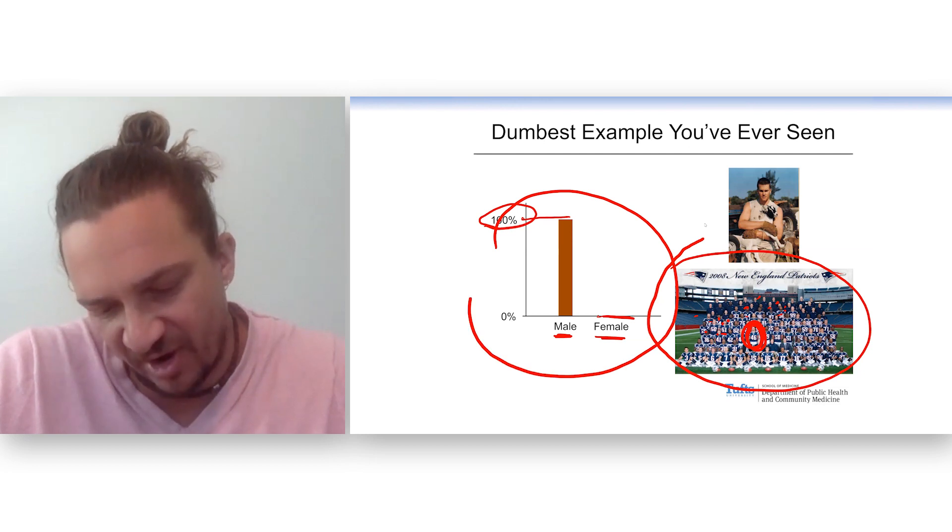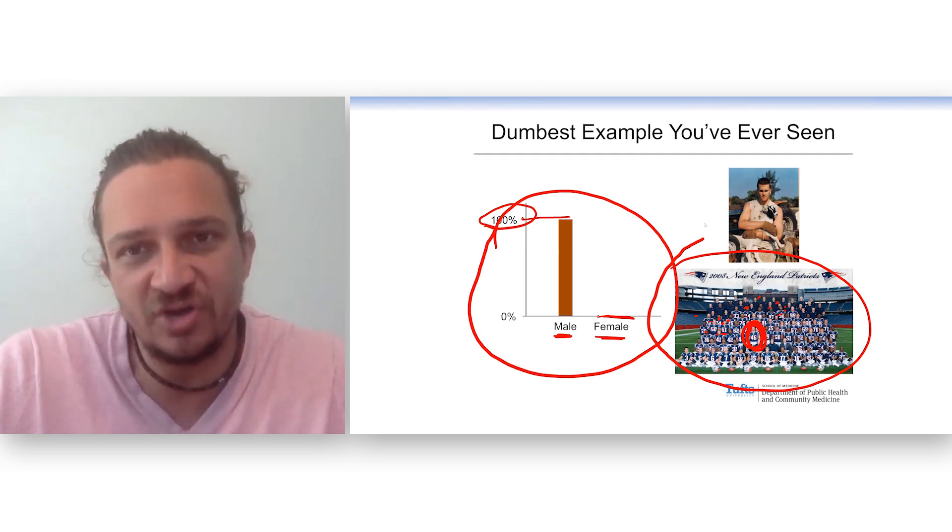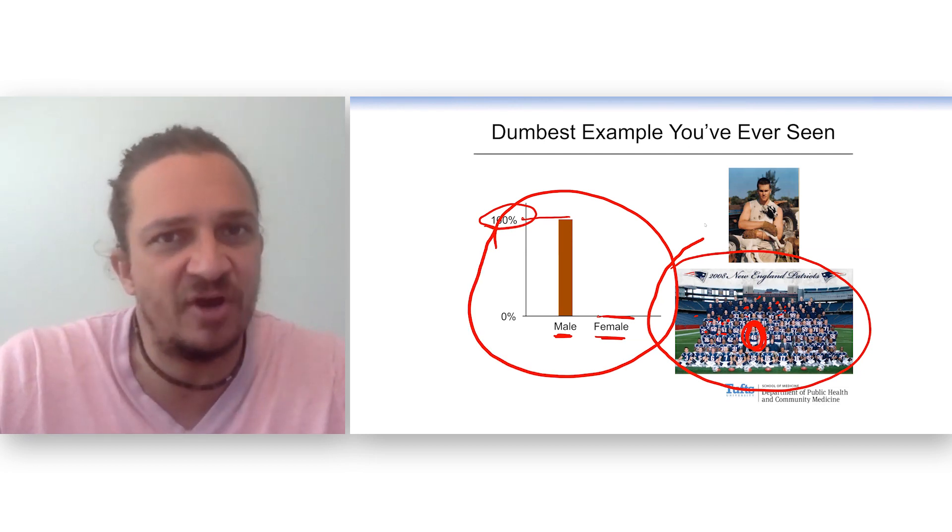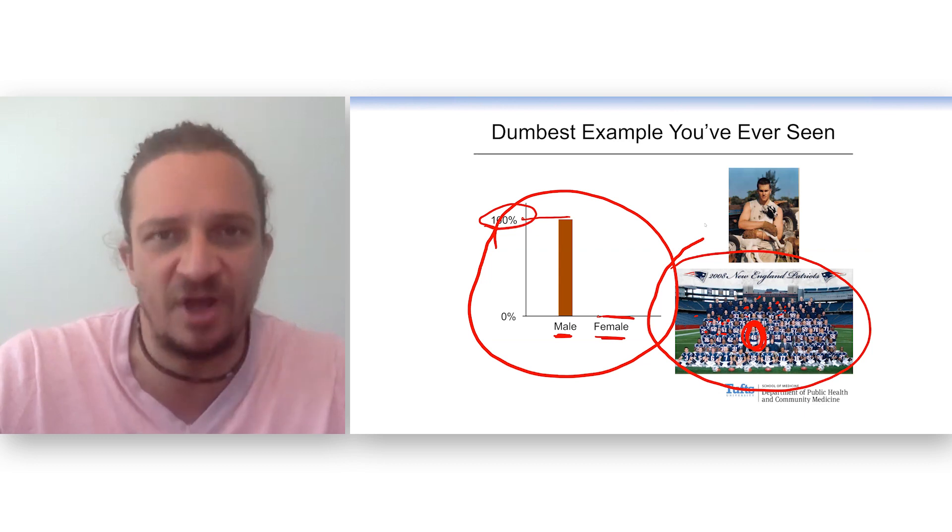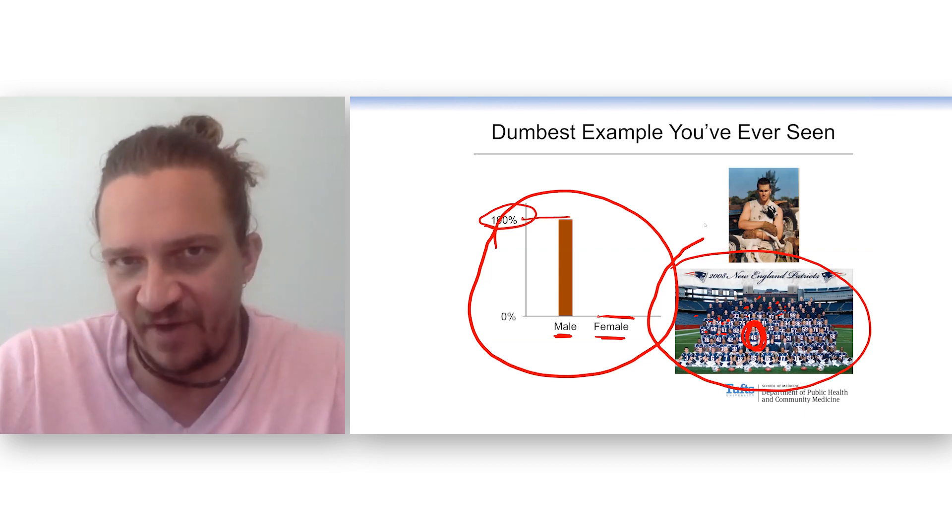This bar chart here not only shows the actual distribution of this variable, but it also shows you if you were to randomly pick somebody from this population, what is the probability that they would have certain characteristics? This example is so dumb and so obvious, but it's the fundamental of everything we're going to do for thinking about p-values and the probability of seeing our own data.